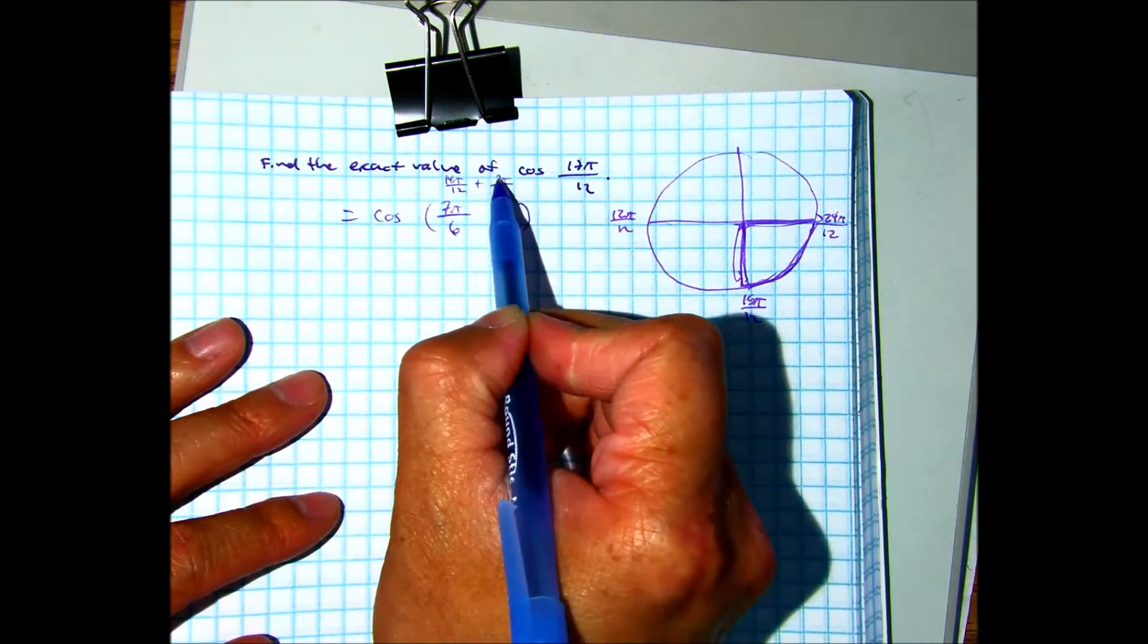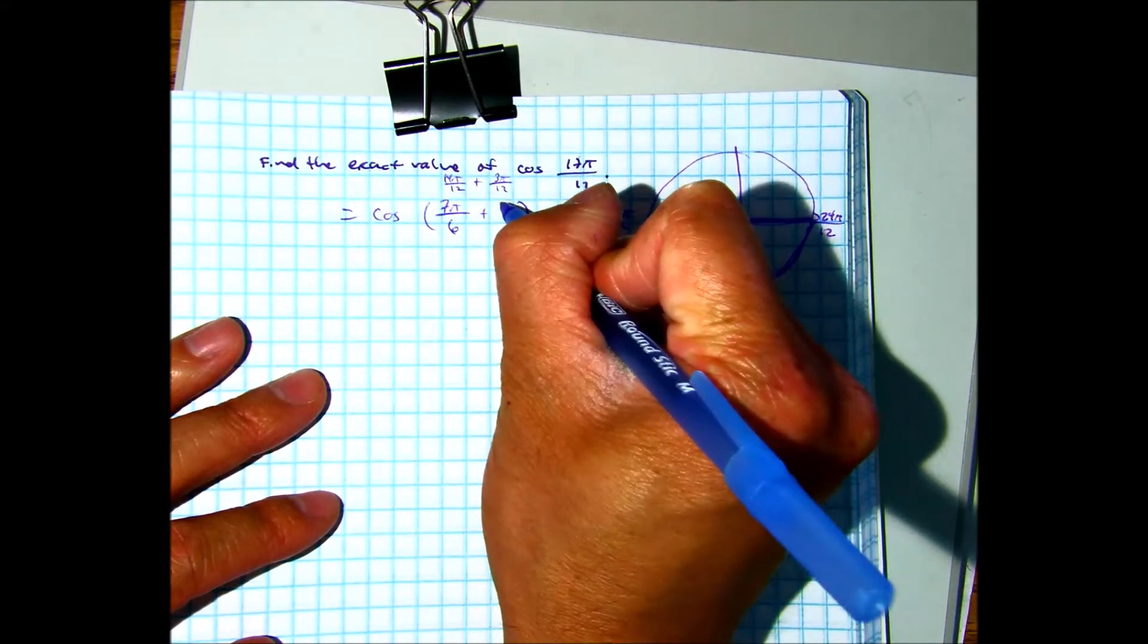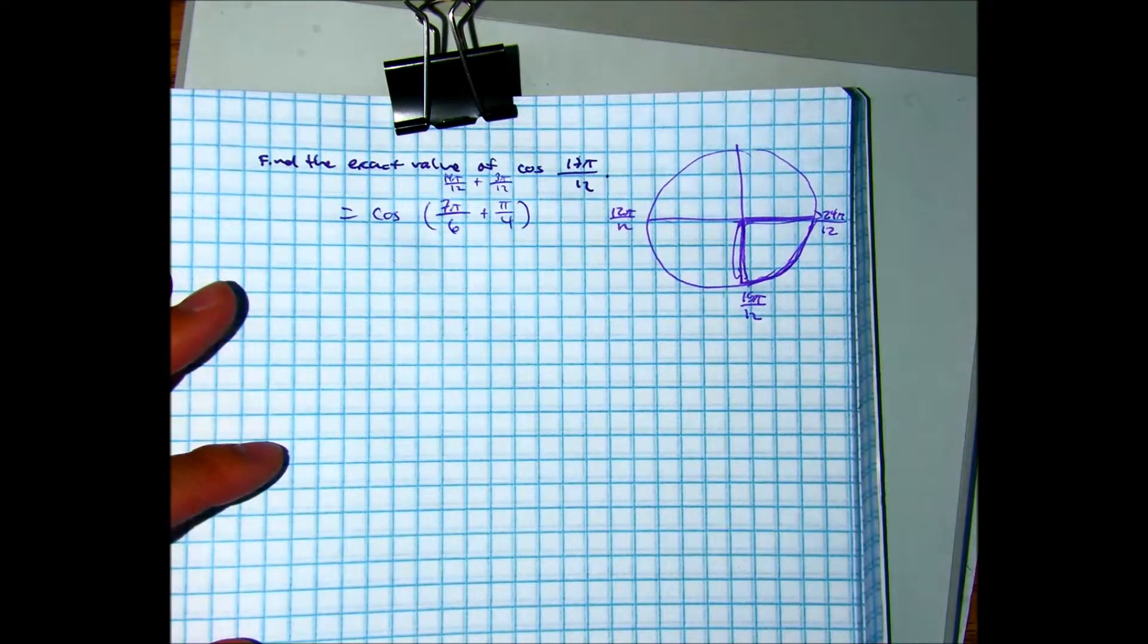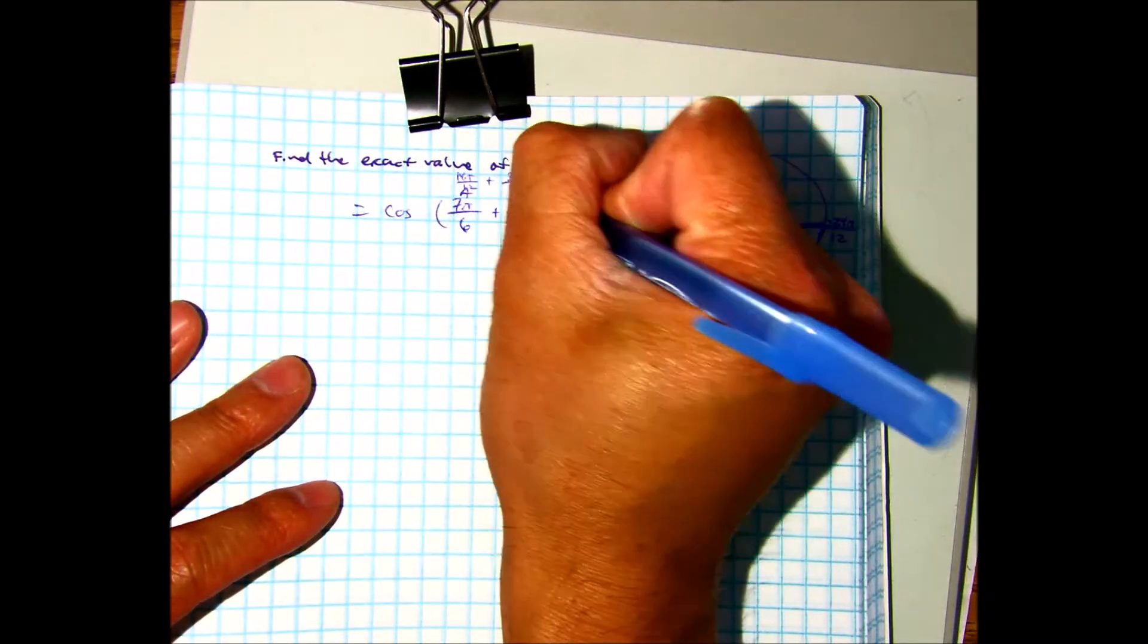And class, 3 pi over 12 reduces to what? Pi over 4. So, again, you can find a bunch of combinations, but this is what we're going to choose. This is our A value. This is our B value.